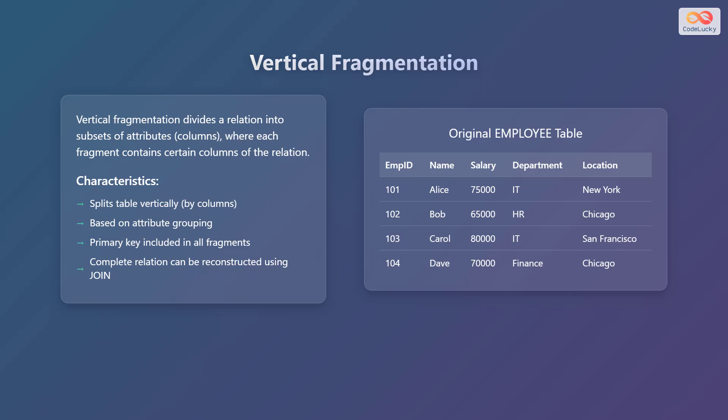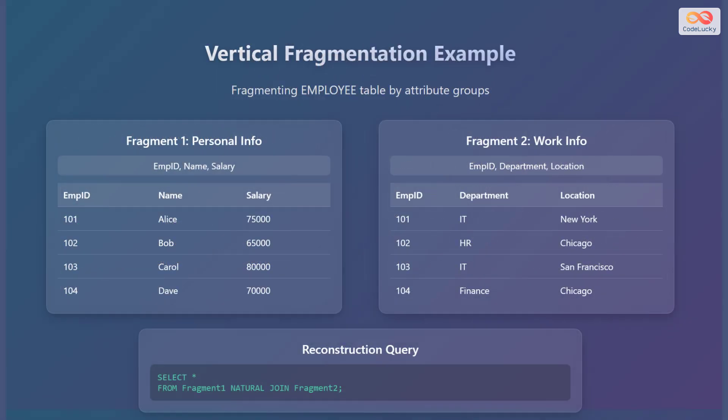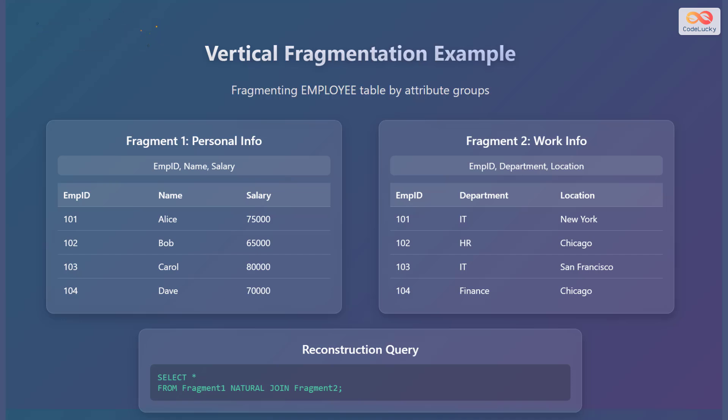Let's go back to our original employee table including attributes: employee ID, name, salary, department, and location. Consider fragmenting the employee table by attribute groups. We will create two fragments: one containing personal information and another containing work information.